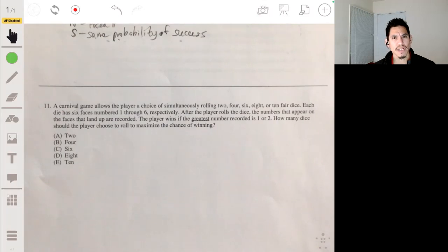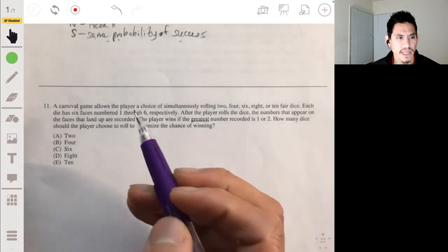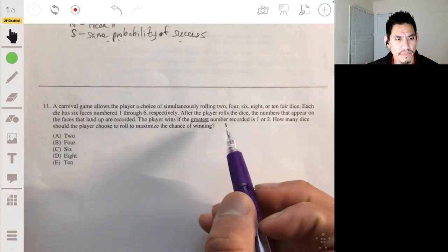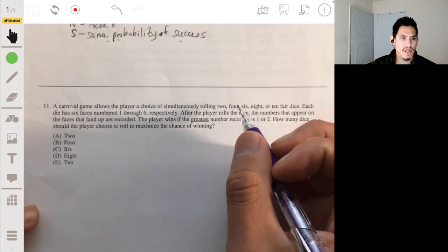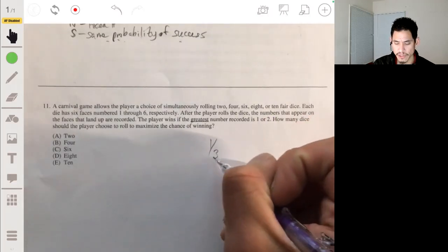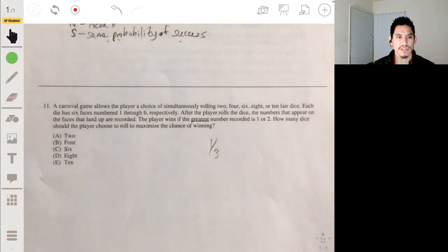How many dice should the player choose to roll to maximize the chance of winning? Okay, so I assume this problem is maybe trying to confuse you, but let's say if you just had 1 die, the chance of getting a 1 or 2 as being the highest is basically just 1 out of 3, because you can get a 1, 2, 3, 4, 5, and 6 out of those 6 choices. 1 and 2, 2 out of the 6. So you basically just want to roll as few numbers of dice as possible, because the more dice you roll, the more chance you have to get a higher number than a 1 or 2.